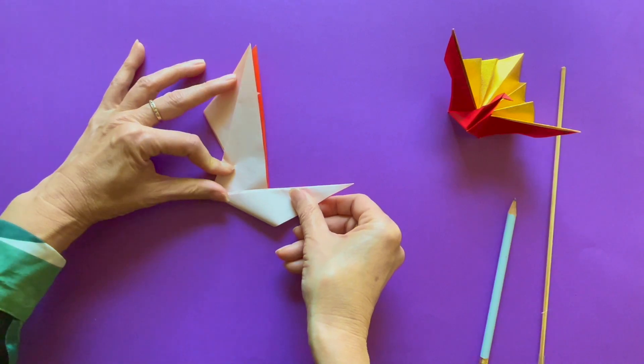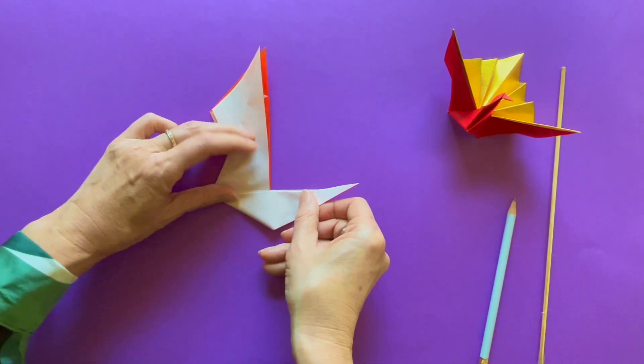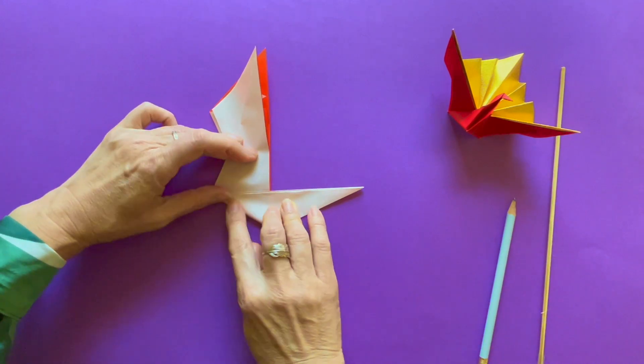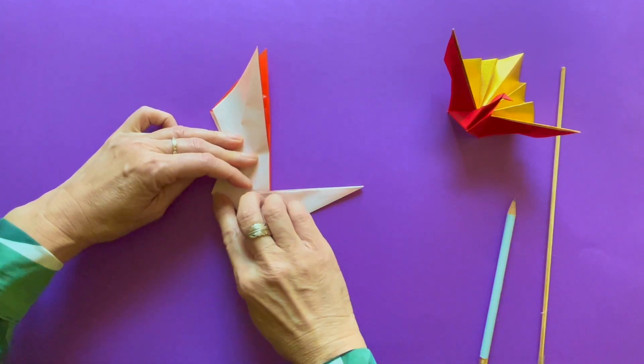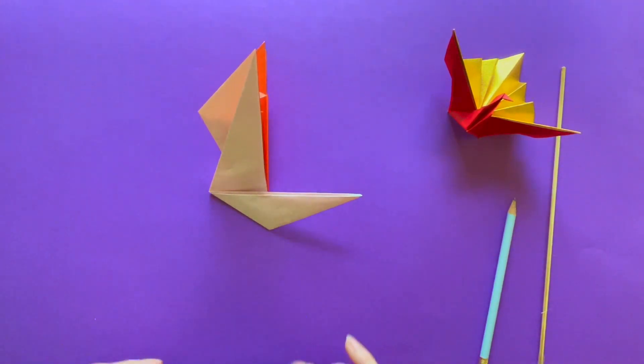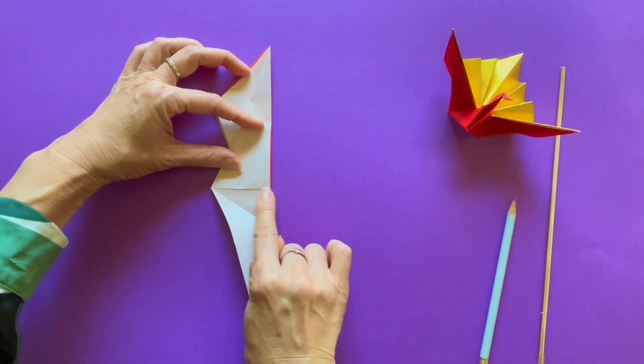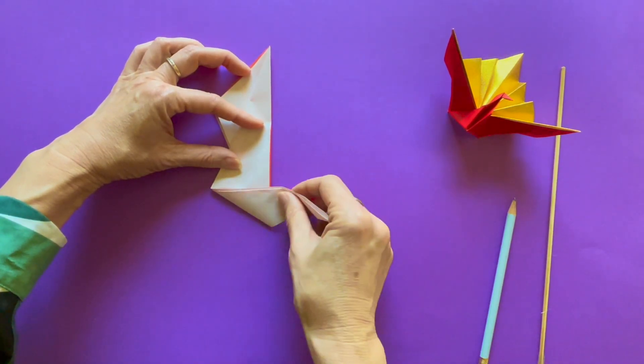Ninety degree shape, like alphabet L. And you are folding it right there. The horizontal small crease.